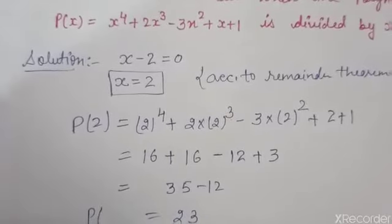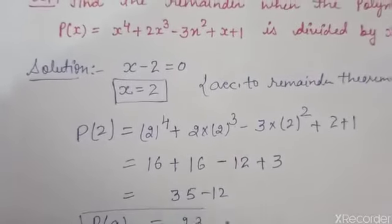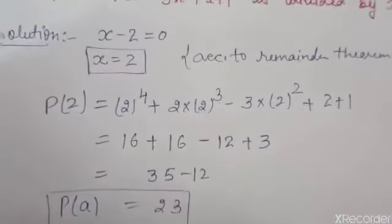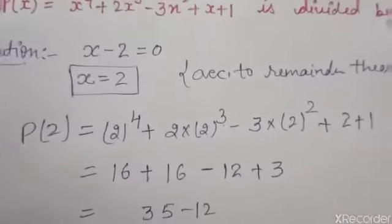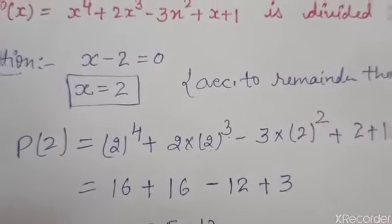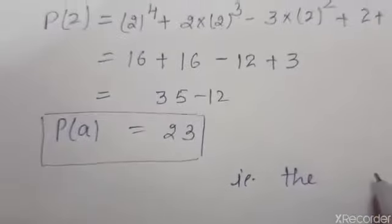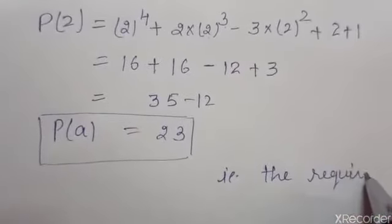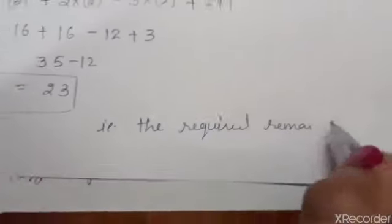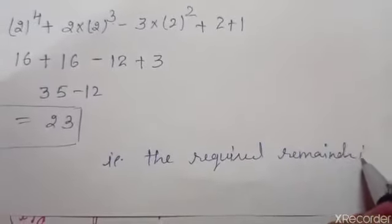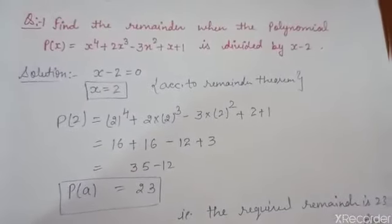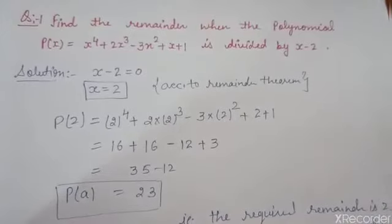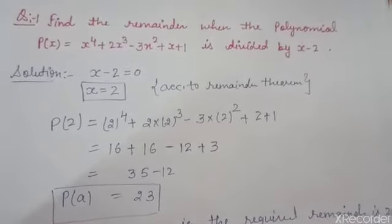So the value of the polynomial at A is 23, and this 23 is the required remainder. That is how we can find the remainder of a given sum without performing any actual long division method — within 2 or 3 steps. The required remainder is 23.